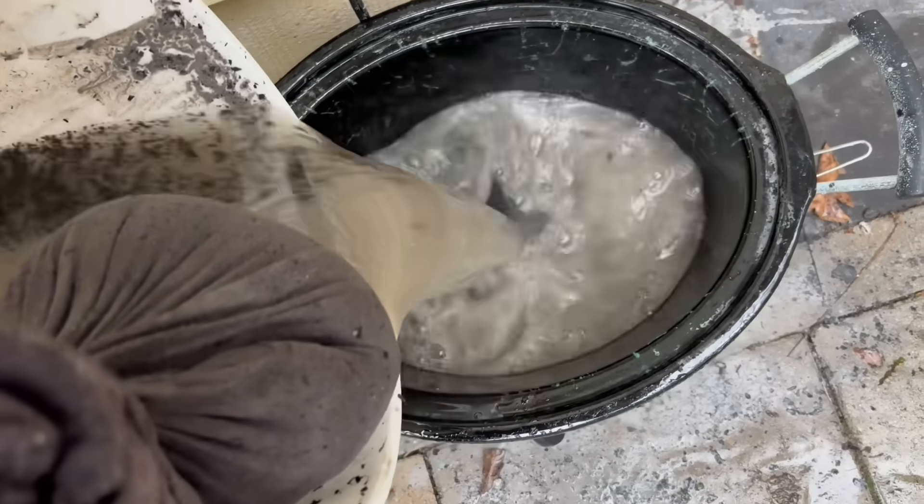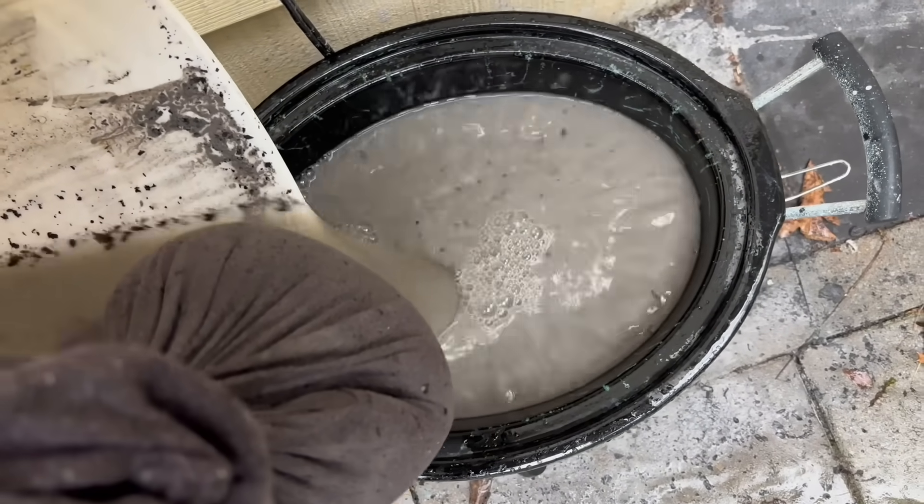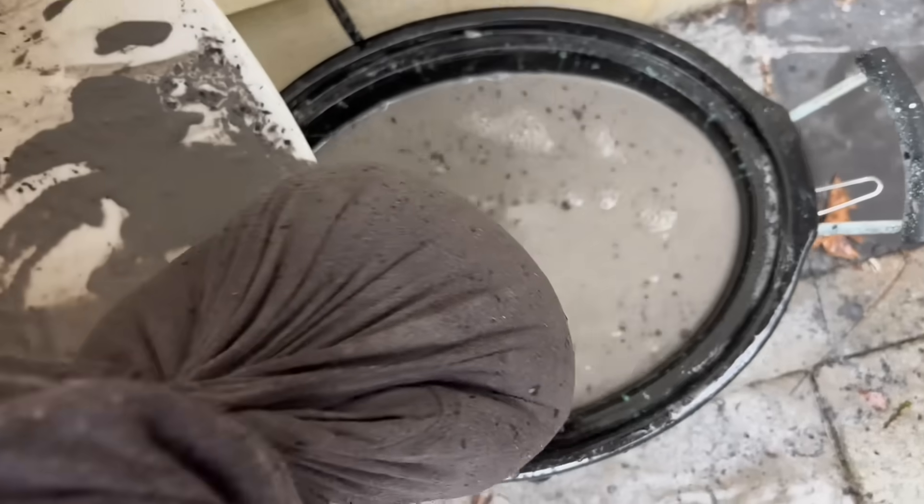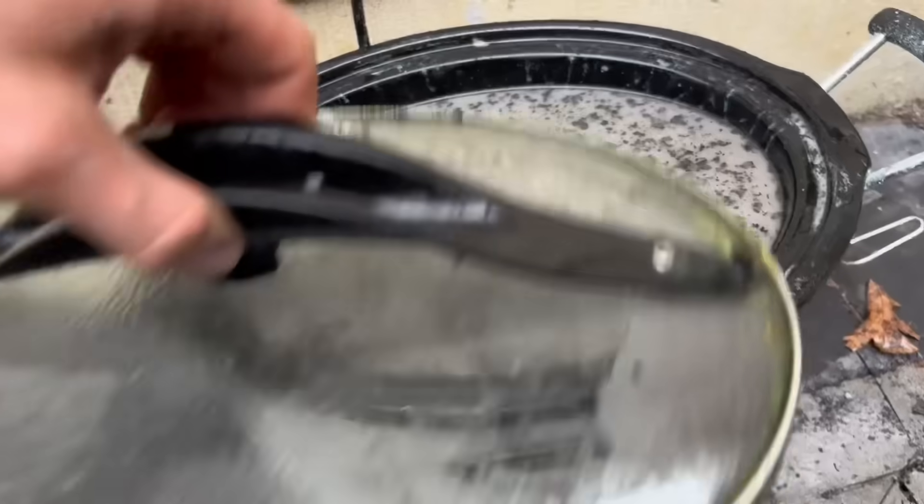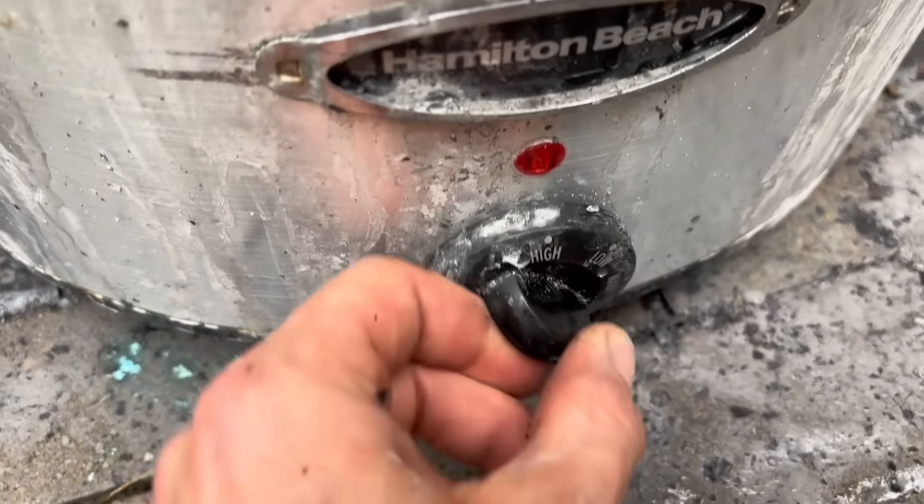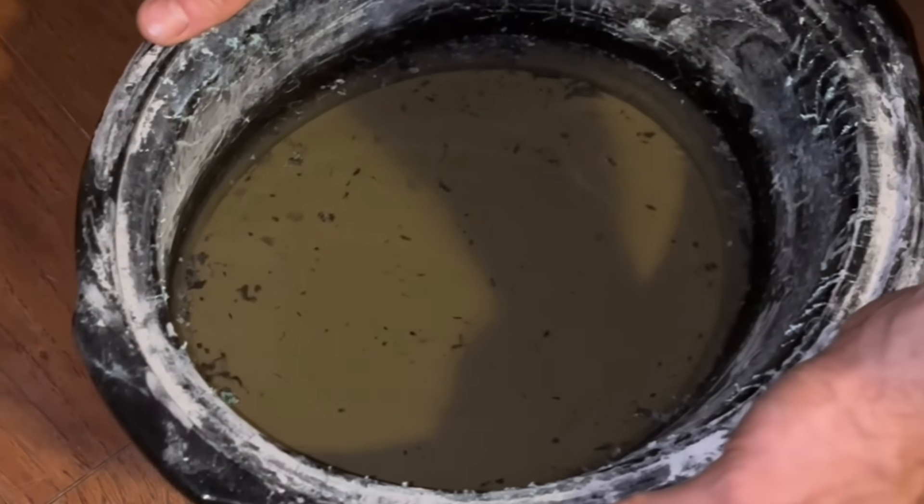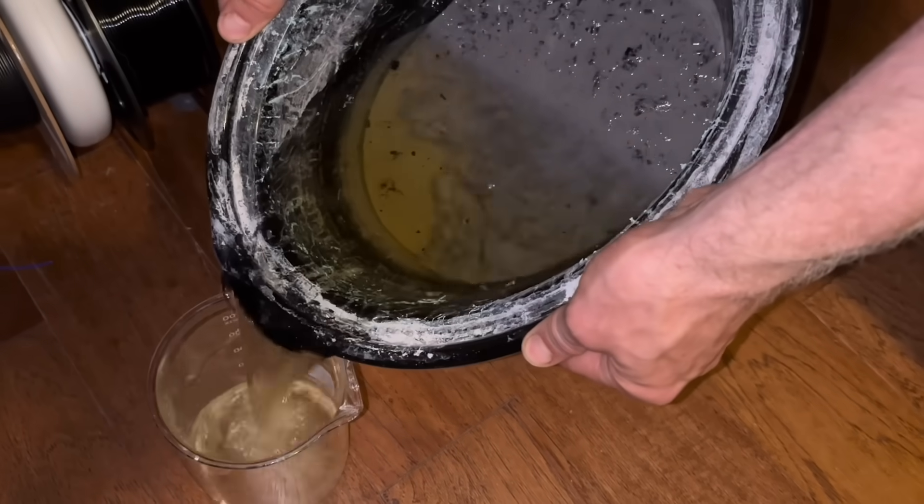After some time, I filtered out this ash a second time and was left with a large amount of dirty ash water. Now this is such a large volume of water that I can't really do anything with it, so I need to reduce the volume. I poured the dirty ash water back in the crock pot, turned it on high, and let it boil down for a few hours. After this, I was left with a much more usable amount of water, which I poured into a beaker.